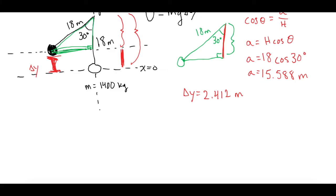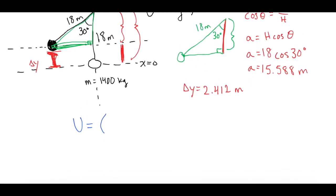All right, now we have everything and it's just plug and chug from this point. So U, or our gravitational potential energy, is equal to the mass which we said was 1400 kilograms.